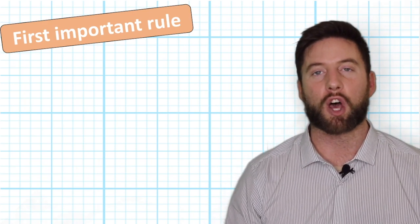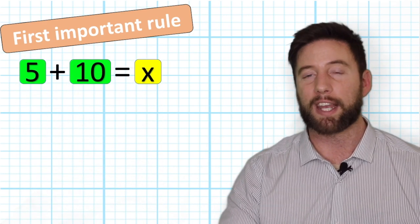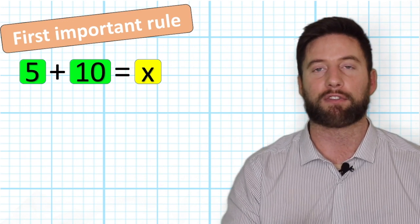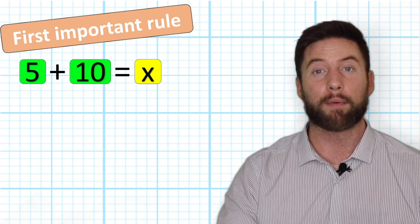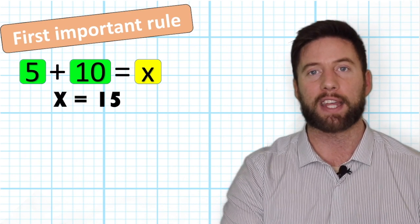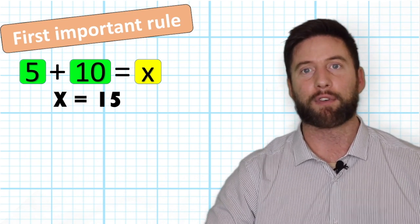The very first rule you need to know is that different symbols or different letters can be used in different problems to represent different values. For example, in the problem we just solved, the letter X was used to represent the number 15. But X could stand for a different value in a different problem.